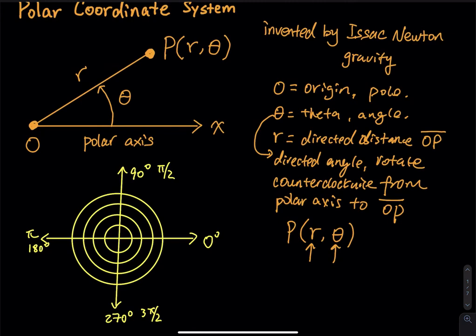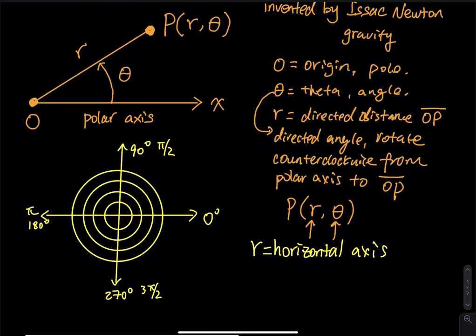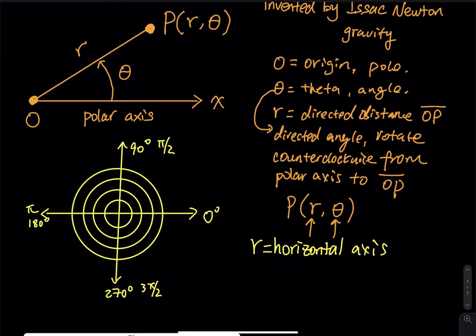So what about those circles? So the horizontal axis. So this one horizontal axis, so the R is horizontal axis. And then this circle, we call that a concentric circles. And then the theta, we can have the theta in either in degree or radian.